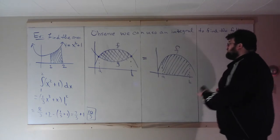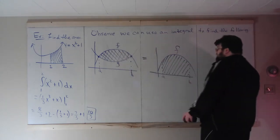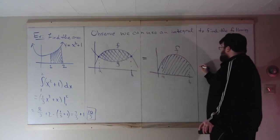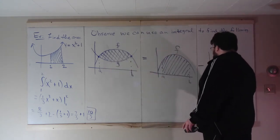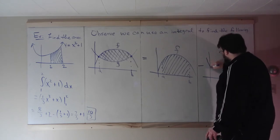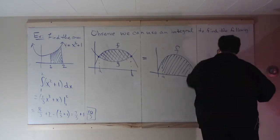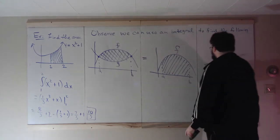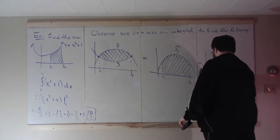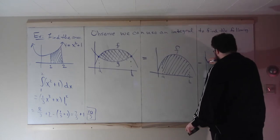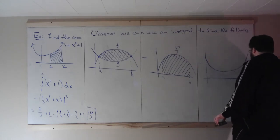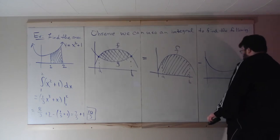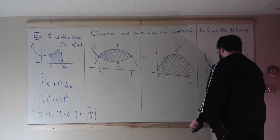But this area we want over here is given by this area without this area down here. Let's draw G. Here's G.